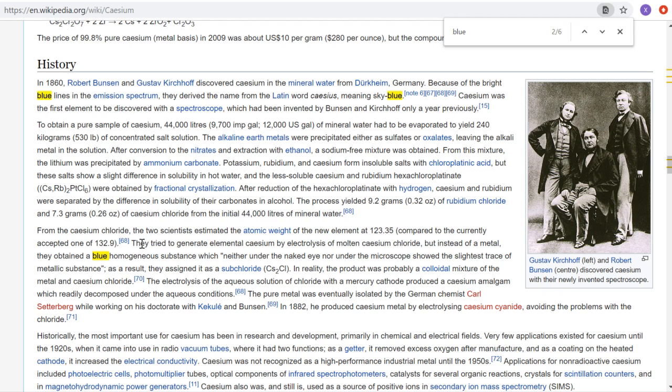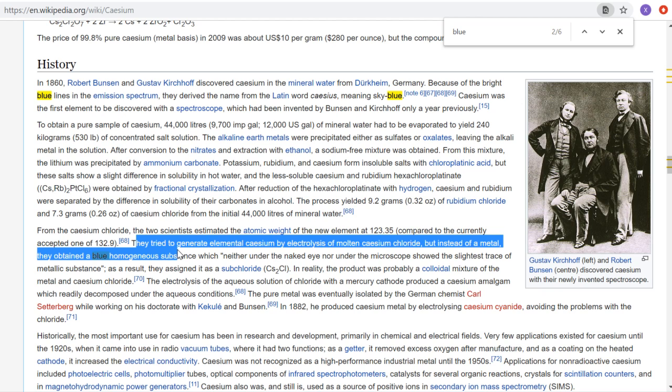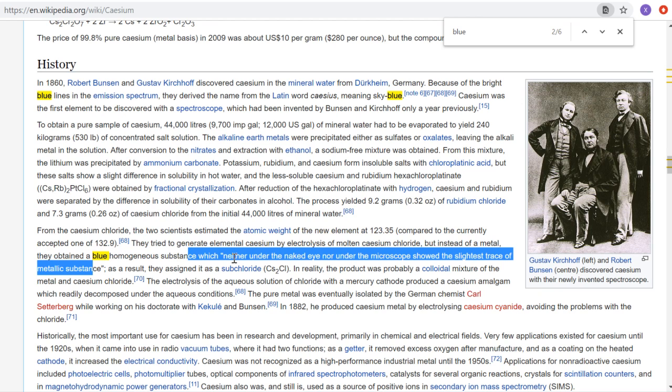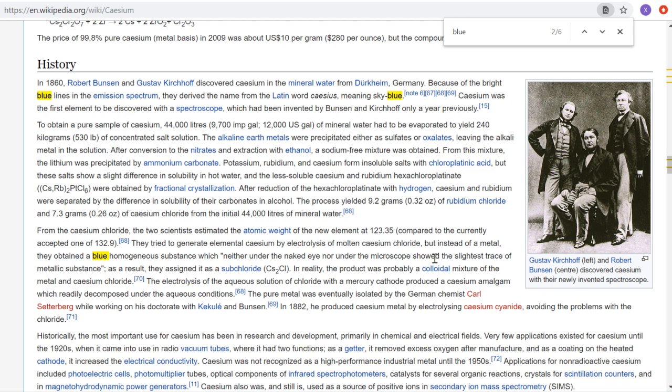And this is what wiki has to say about it. They tried to generate elemental cesium by electrolysis of molten cesium chloride. But instead of a metal, they obtained a blue homogeneous substance, which neither under the naked eye or under the microscope showed the slightest trace of metallic substance. Interesting. As a result, they assigned it to a subchloride. I mean, this is where they drift off into, they didn't really have a clue what the hell was going on. Not surprising given the era that they were doing it in.